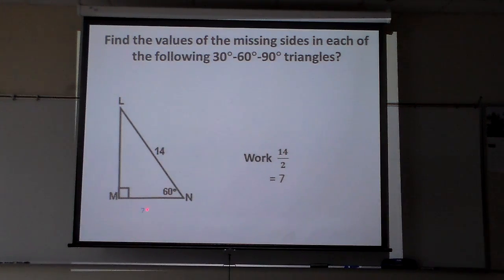And if this side is 7, the 60 degree side is always this number, whatever is here, multiply it by the square root of 3. So the answer is 7 square roots of 3, that's all that it is.